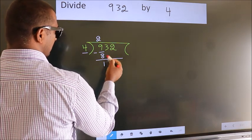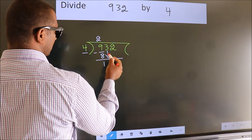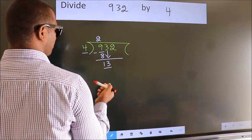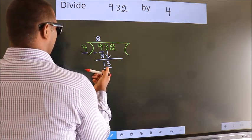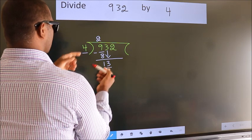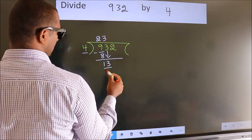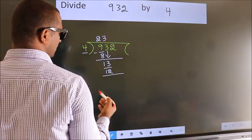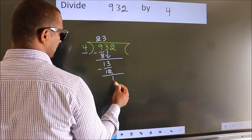After this, bring down the beside number. So 3 down. So 13. A number close to 13 in 4 table is 4 threes, 12. Now we subtract. We get 1.